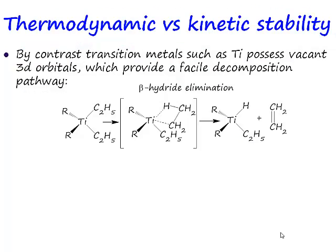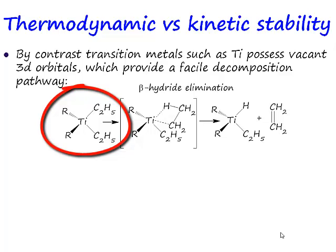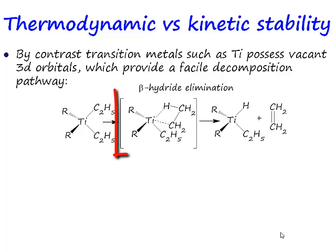The origin of the instability of transition metal alkyls is frequently the following reaction. If you start off with a titanium dialkyl species — diethyl titanium; it doesn't really matter at this stage what the other R ligands are — if you have a compound like that, then what you've got are two ethyl ligands. We've drawn out one of these ethyl ligands: titanium–CH₂–CH₃.